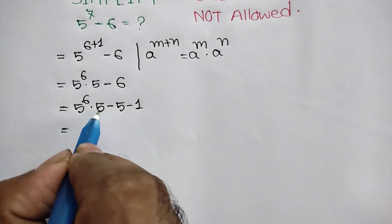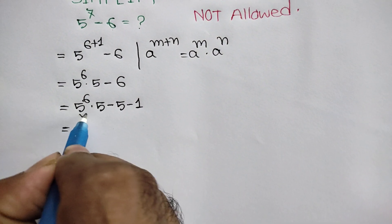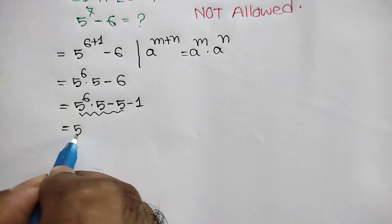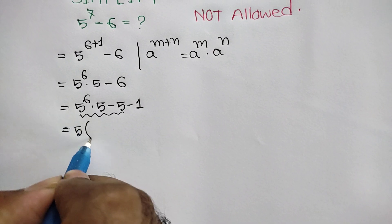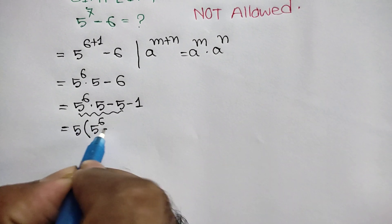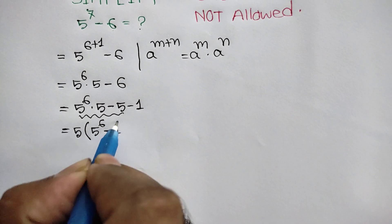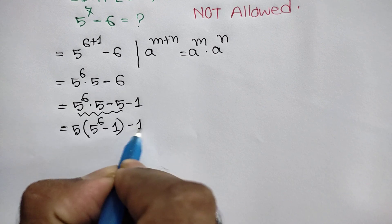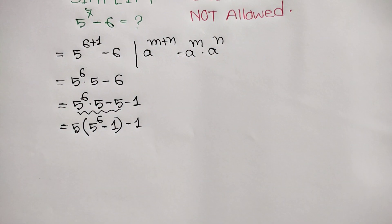Now, taking common from the first two terms, we will get 5 times 5 to the power 6 minus 1, and this negative 1.